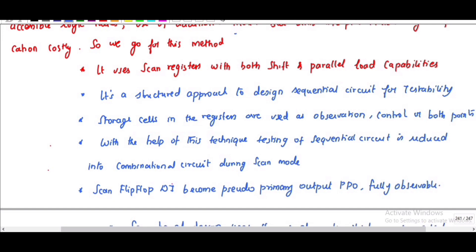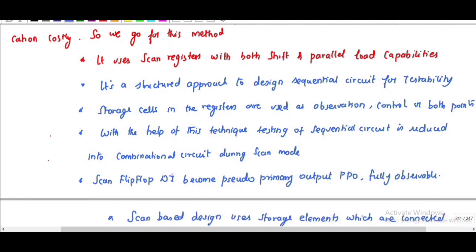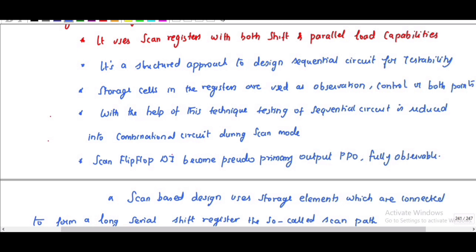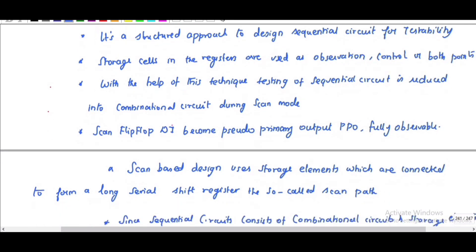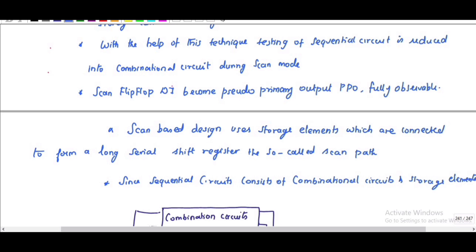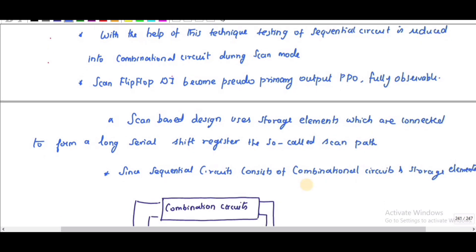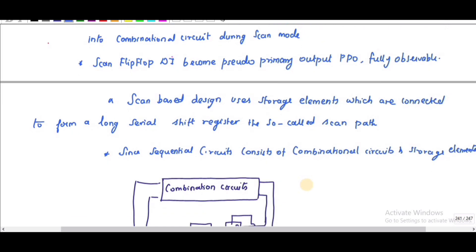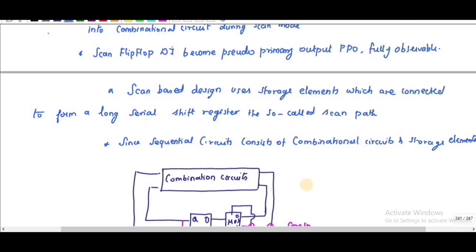In scan flip-flops, the data input DI becomes a pseudo primary output (PPO) that is fully observable, and the scan flip-flop data output DO becomes a pseudo primary input (PPI) that is fully controllable. The scan-based design uses storage elements connected to form a long series shift register, which is called the scan path or scan chain.